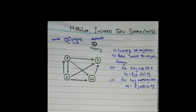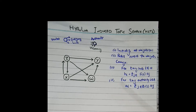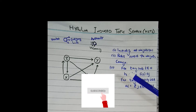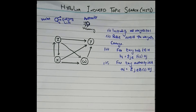We will apply the Hyperlink Induced Topic Search algorithm through this example. There are four important steps in HITS. First, we initialize all weights to one. Then we repeat the steps until the weights converge, calculating the hub and authority for every node.